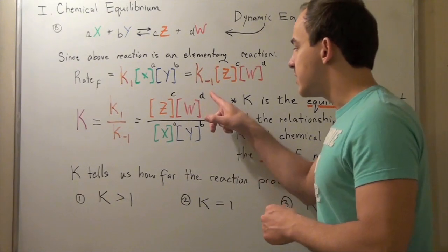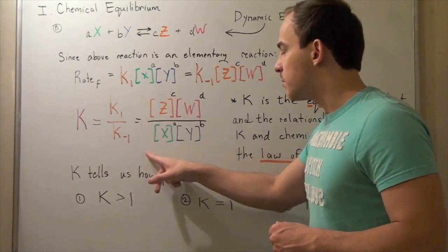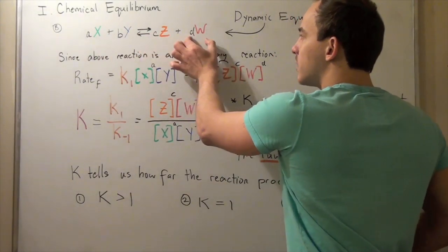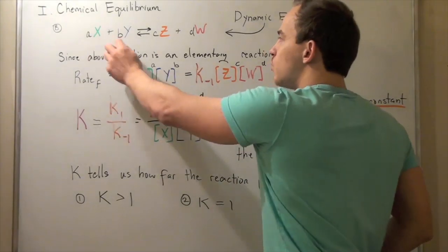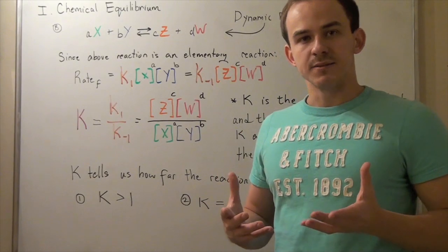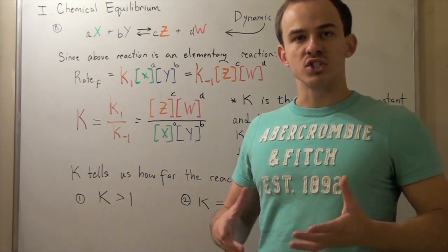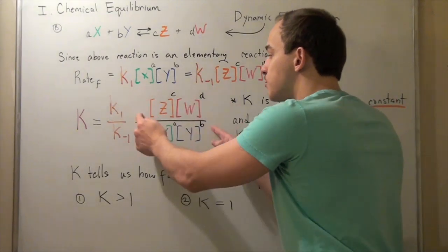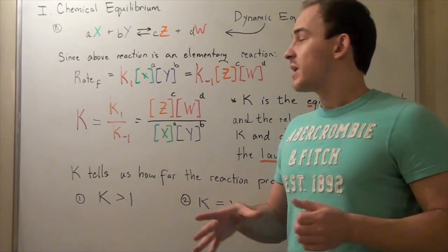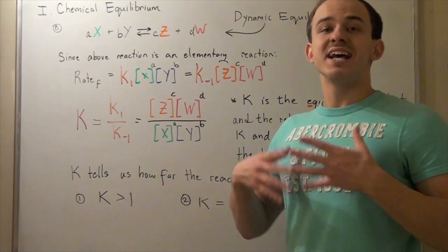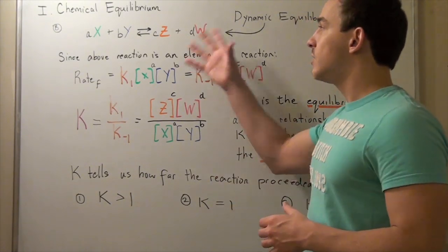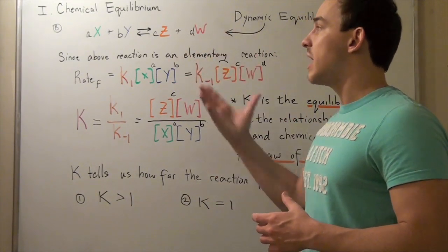One last thing about the equilibrium expression: notice we included every single reactant and product, because we assumed X, Y, Z, and W were in either the aqueous state or the gas state. Only aqueous or gas molecules are included in the equilibrium expression. Solid molecules and liquid molecules are not included, because their density stays the same throughout the experiment and they have no effect on the equilibrium constant or chemical equilibrium.